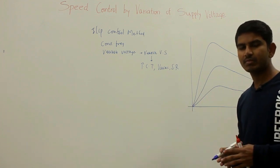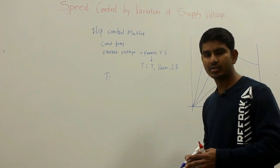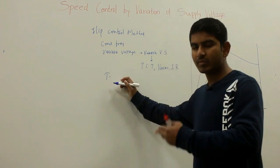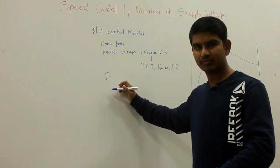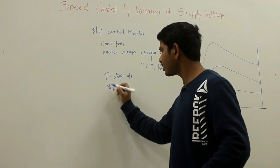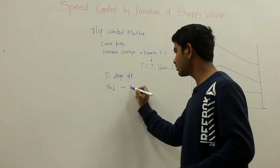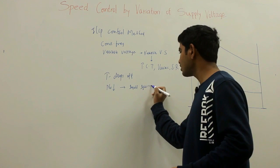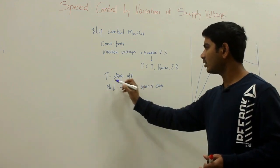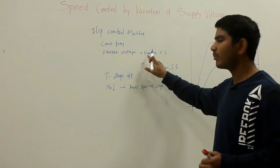Due to those limitations, this method of speed control is used only for loads where the torque required drops off considerably as the speed is reduced. Such characteristics can be found in small squirrel cage motors driving fan loads. Here we can obtain a variable speed by supplying variable voltages.